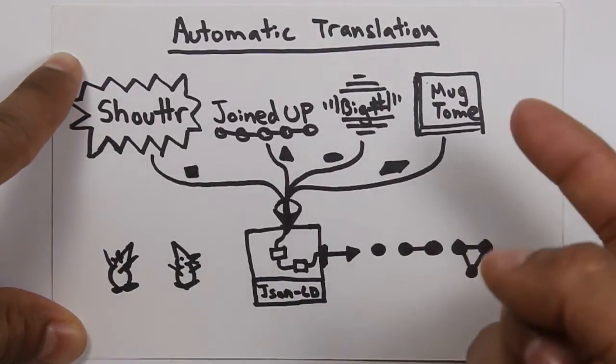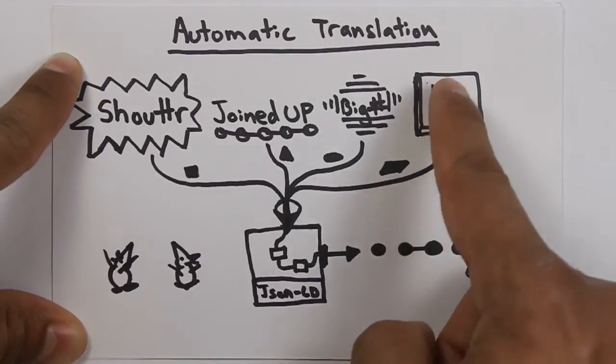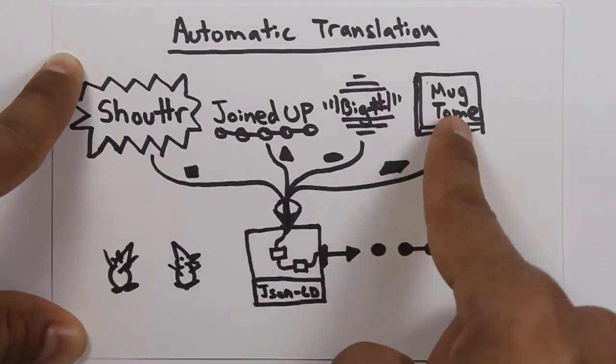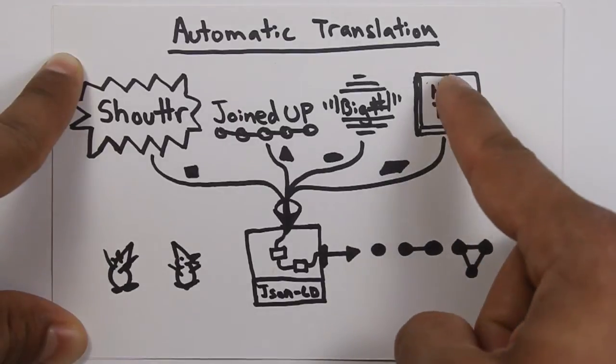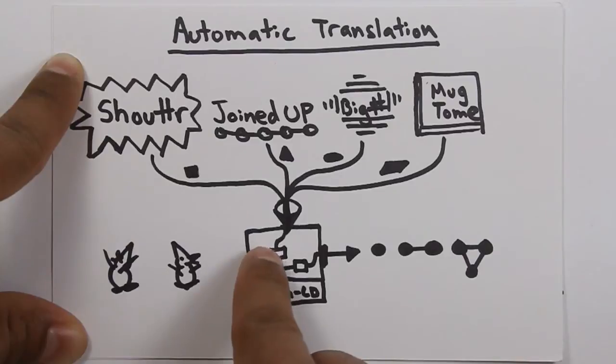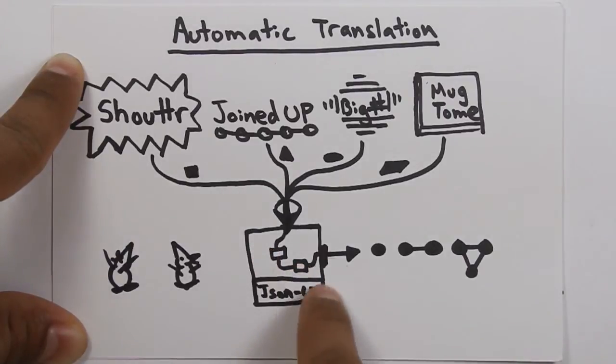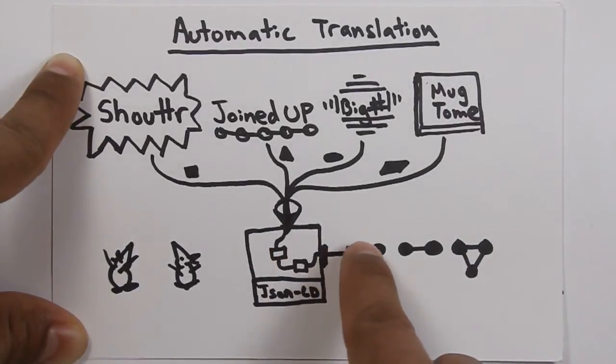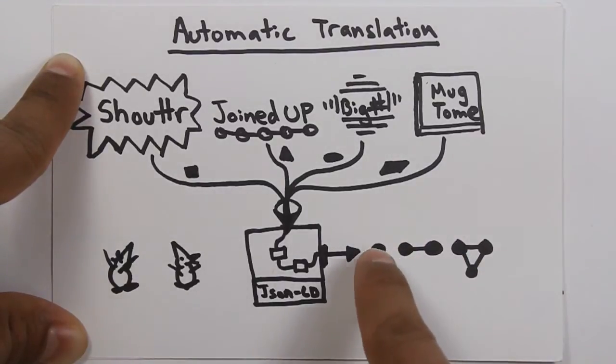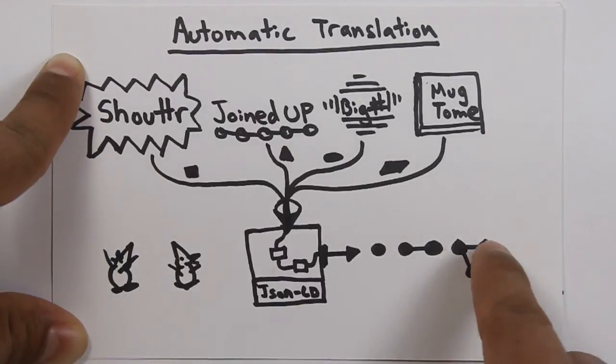So, this is how we do automatic translation of data from multiple different websites that were never really meant to interoperate with one another. Using JSON-LD, we can take all of these different data sources, remap them using the expand and compact calls in JSON-LD, and spit out something that is very easy to use, very uniform, so that our software application only really needs to work with one type of data.